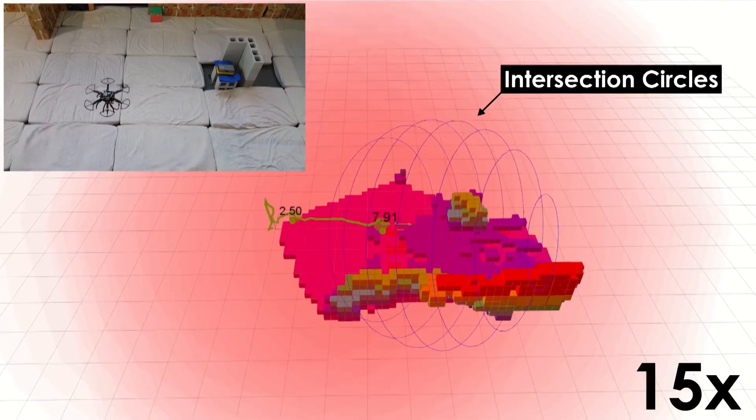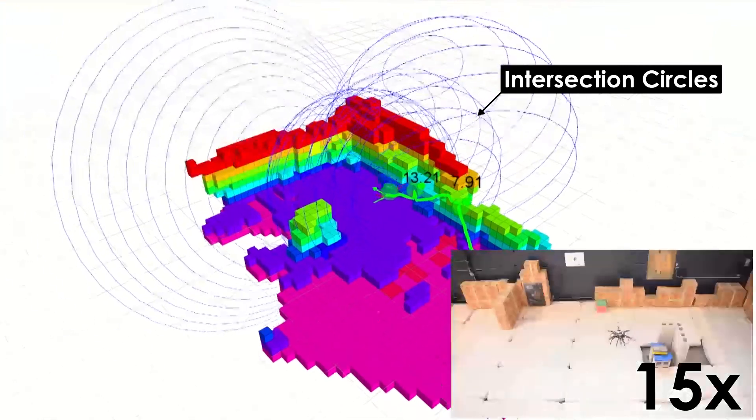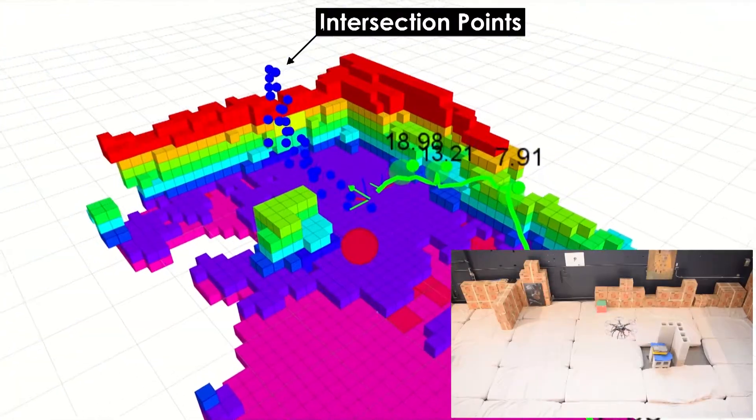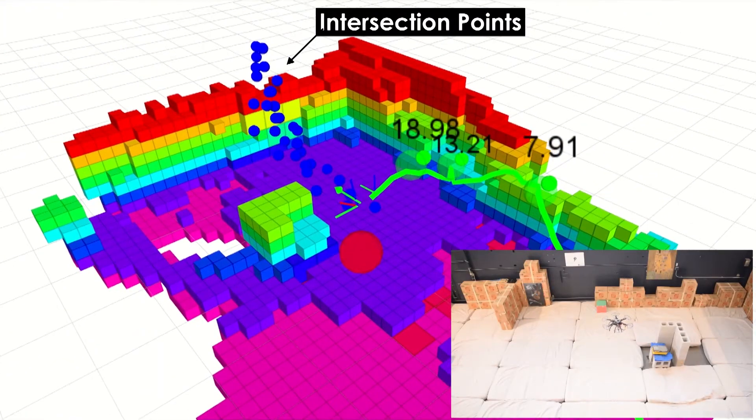The presented results refer to the localization of a cesium-137 source using a small aerial robot both with and without any prior knowledge of its environment.